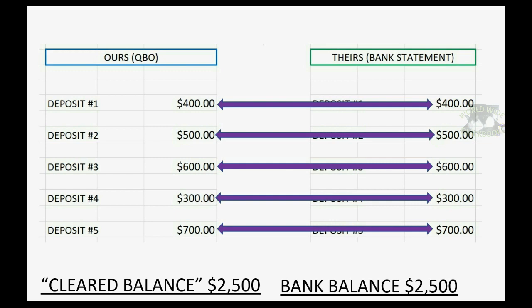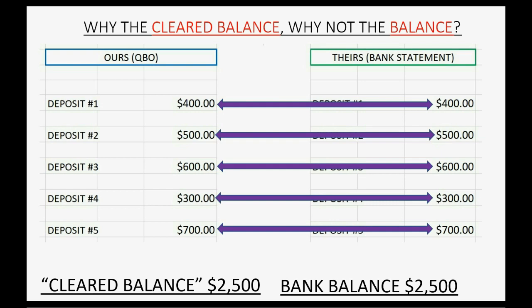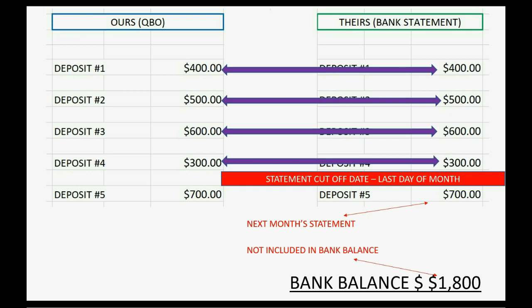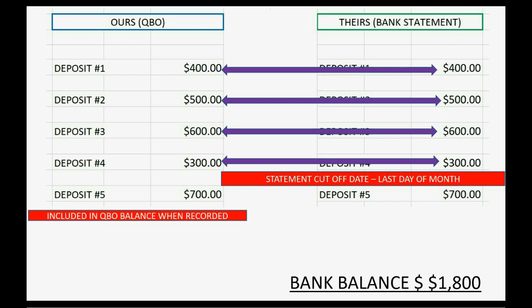Now you may well ask: why do we compare the bank balance to the cleared balance? Why not just compare it to whatever the balance is in our QuickBooks Online records? Well, bank statements have a cutoff date, which is usually the last day of the month. Any deposit or check that we recorded in our QuickBooks records that the bank did not have an opportunity to record before they cut the statement — those transactions will not be included in the bank balance because the bank did not know about the transaction until after the cutoff date. But we knew about the transaction before the cutoff date, so we are including it in our QuickBooks Online balance.